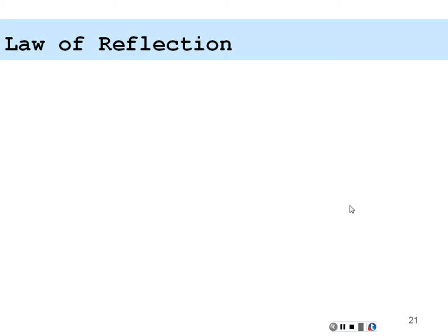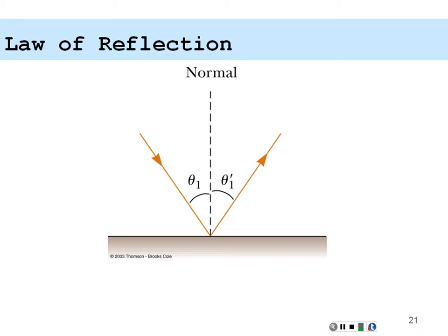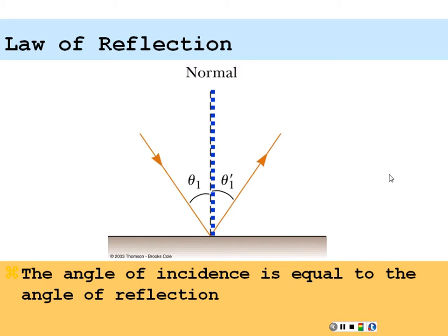Back to reflection. With specular reflection, we define what we call a normal, which is perpendicular — at a 90-degree angle — to the surface of the boundary. That normal line is how we define our angle of incidence. The angle between the ray going in and the normal is our angle of incidence, and the angle between the ray going out and the normal is our angle of reflection. It turns out that the angle of incidence is equal to the angle of reflection for specular reflection: theta incident equals theta reflected. That's the law of reflection.